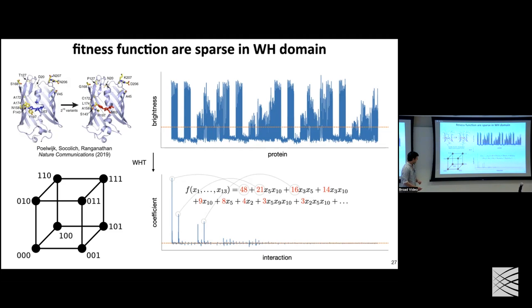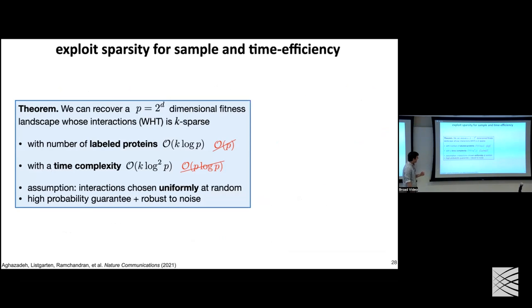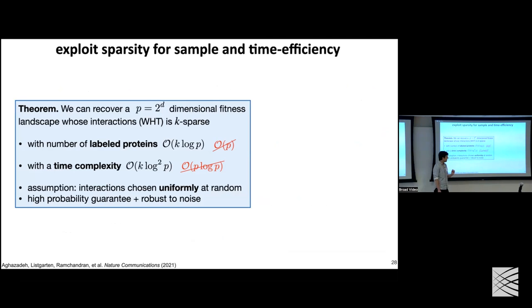Sparsity should help both statistically and computationally. If the spectrum were completely dense, you'd need more information to learn it. If it's sparse with only a few non-zeros, we can do something smart algorithmically. There are results from signal processing showing that if a p-dimensional fitness landscape is exactly k-sparse in the Fourier domain, you can recover it using only k log p measurements instead of p many measurements — using something like fast Fourier-based algorithms.